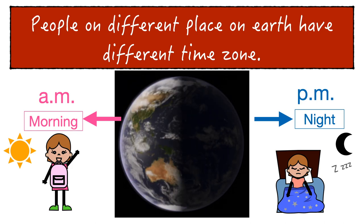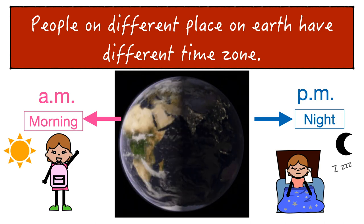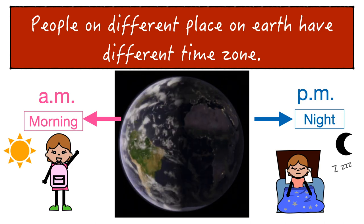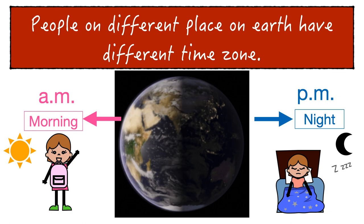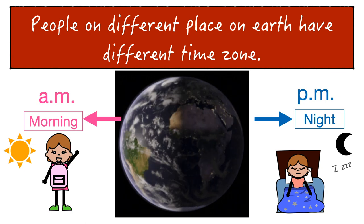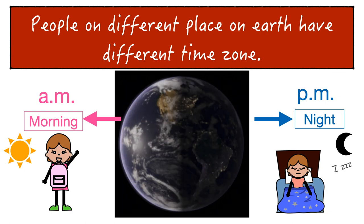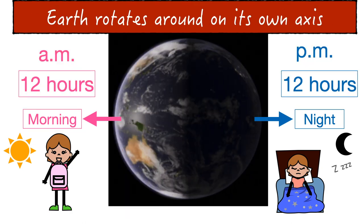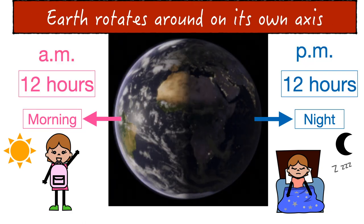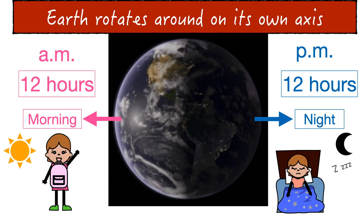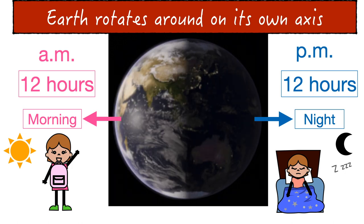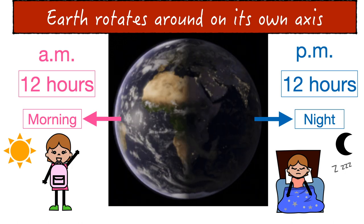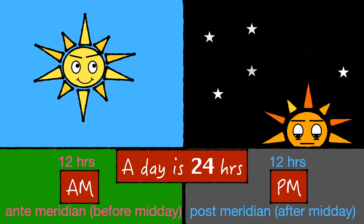If you travel to another place, you would experience a time change. A morning on one side of the earth would be the evening on the other side. The earth rotates on its own axis with respect to the sun — when the earth rotates one time, it is one single day, that is 24 hours.